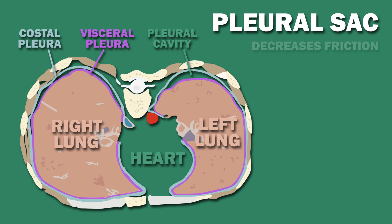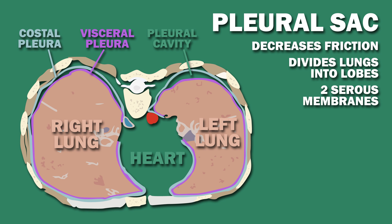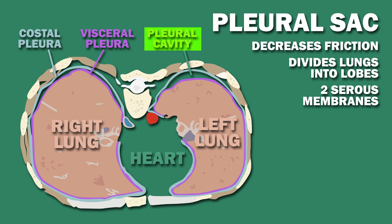The movement of the lungs encounters little friction thanks to the pleural sac. The pleurae are two serous membranes — one lining the inner wall of the ribcage, and one resting on the surface of the lungs. Between these membranes is the pleural cavity, which contains pleural fluid for lubrication.